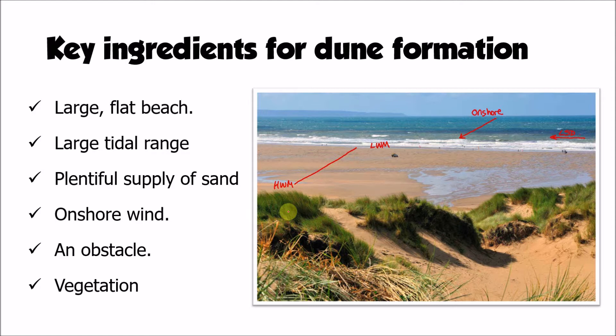An obstacle is really important. That could take a variety of forms — it could be a small pebble, some seaweed, a bit of driftwood, anything that's been washed up onto the beach by the waves. We need to have that obstacle to give the sand something to build up around initially. The sand can't build up around itself; it needs to have an obstacle that it's going to hit and build up around in order to start the formation of sand dunes.